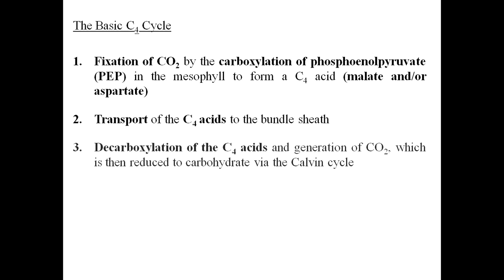In step one, carbon dioxide is fixed through carboxylation of phosphoenol pyruvate in the mesophyll cells, forming the C4 acid — which may be either malate, aspartate, or both. In step two, these acids are transported from mesophyll cells to bundle sheath cells.